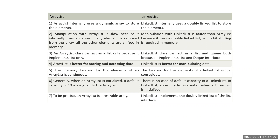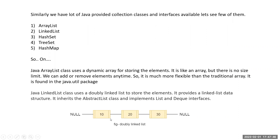Manipulation with LinkedList is faster than ArrayList because it uses a doubly linked list — no bit shifting is required in memory. For example, if you are removing node 20 from a linked list of 10, 20, 30, you don't need to worry about the entire list — you only need to change the address links for 10 and 30. So the next element pointer for 10 will be updated to point to 30, and that's why LinkedList is faster for manipulation.